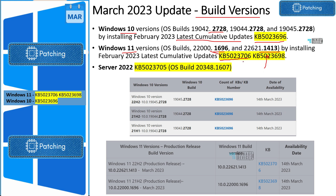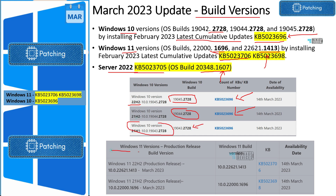Windows 11 22H2 has build number 22621.1413. The KBs associated with March Patch Tuesday are KB5023706 and KB5023698 — KB5023698 is for Server 2022 with build number 20348.1607. For Windows 10, 22H2 gets a specific build number after installing its patch, 21H2 gets another, and 21H1 gets another. For Windows 11 22H2, the build updates to the 22621 series, and for 21H2 the build number will be 1696 after installing the patch. I will add links to the updated version numbers for all Windows 10 and Windows 11 OS versions in the description.